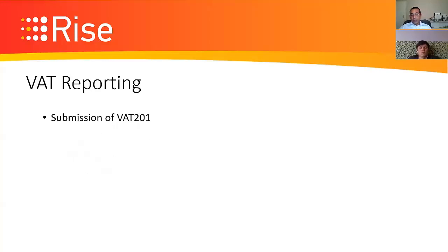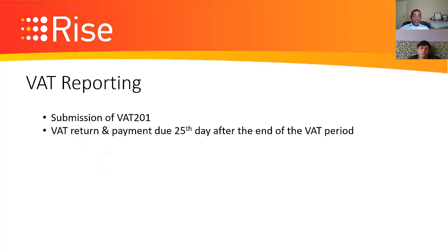The VAT report is the VAT 201 form. You fill it in with your input tax and output tax, and it calculates what you owe SARS or what refund you're due. It's due on the 25th day after the end of your VAT period — for example, if your period ends in January, you submit by the 25th of February, or the preceding working day if the 25th falls on a Sunday.